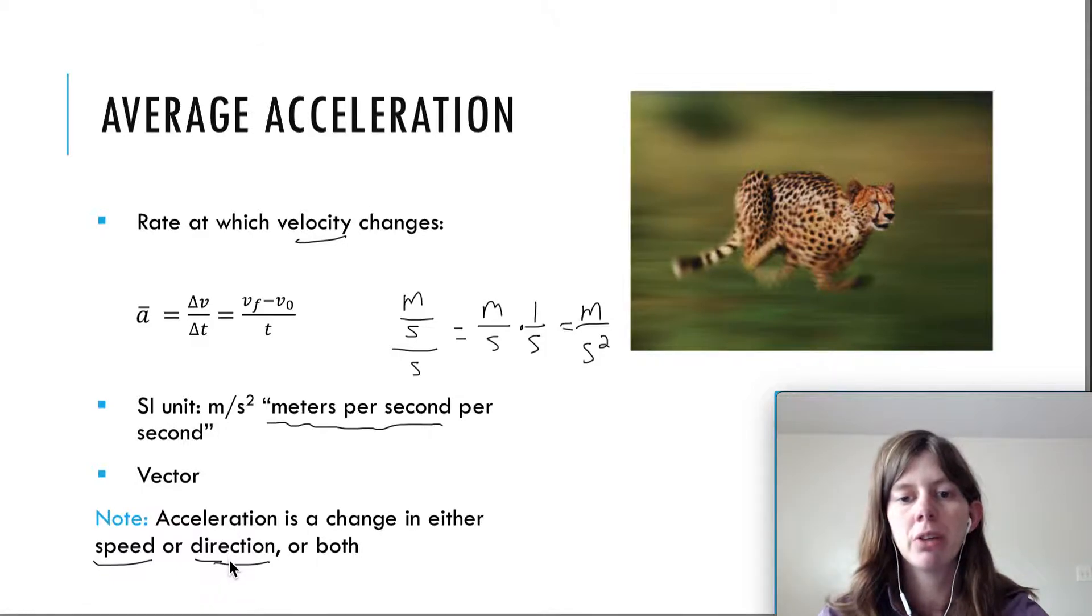If you remember video number six, the moving man video, where I showed you with the applets, that the moving man was moving to the right for example, he had some acceleration to the left, and as he was traveling this way, he actually ended up slowing down, and then stopping, and then moving back in the other direction. But while he was stopped here, he was changing directions, and he still had that acceleration.